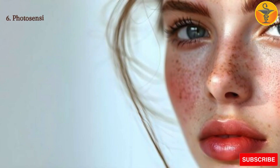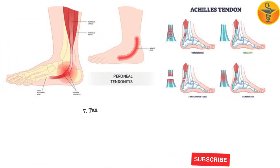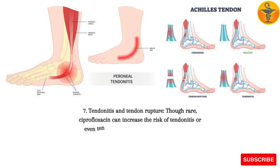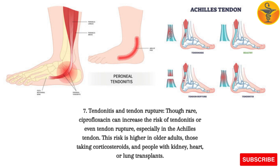6. Photosensitivity — it can make your skin more sensitive to sunlight, leading to sunburn more easily. 7. Tendinitis and tendon rupture — though rare, ciprofloxacin can increase the risk of tendonitis or even tendon rupture, especially in the Achilles tendon. This risk is higher in older adults, those taking corticosteroids, and people with kidney, heart, or lung transplants.